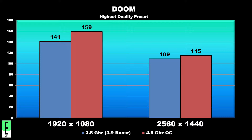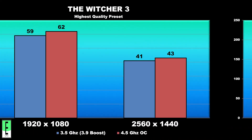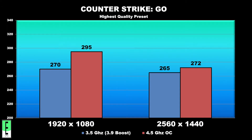Moving over to 2560x1440 in Doom, that increase was about 6%. The next game in our testing is Rocket League — at 1080p we saw about a 7% increase in frame rate, and at 2560x1440 that increase dropped to about 6%. Next up we have The Witcher 3, where we saw about a 5% increase across the board at both 1080p and 1440p. Moving along to Counter-Strike: Global Offensive, we saw an increase of about 9% at 1920x1080, dropping to just 3% at 2560x1440.